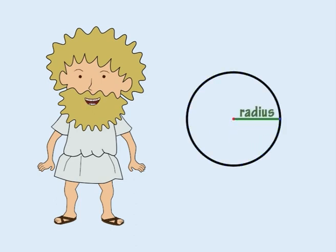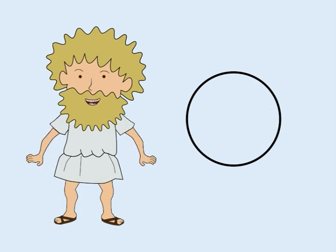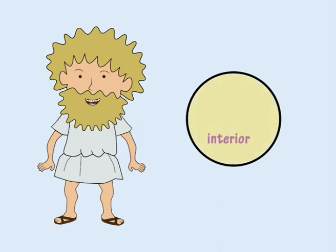The common distance from the centre to any point on a circle is called the radius. The plane in which a circle occurs can be divided into two regions: the interior of the circle and the exterior, with the perimeter lying on the boundary.